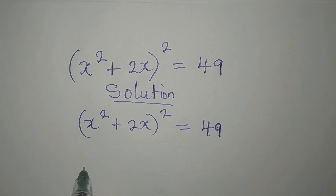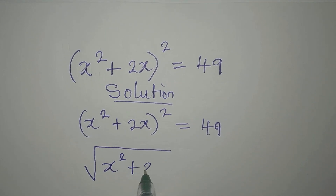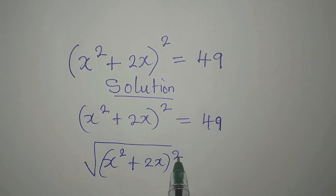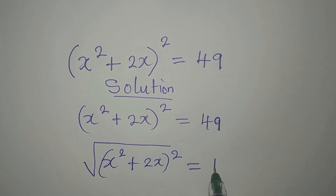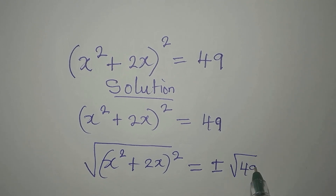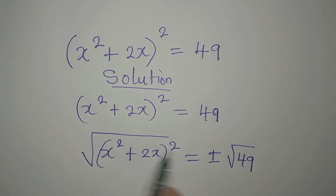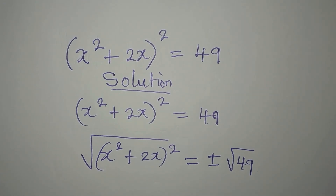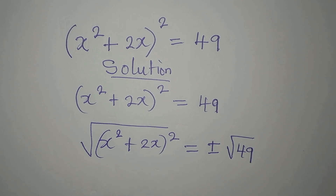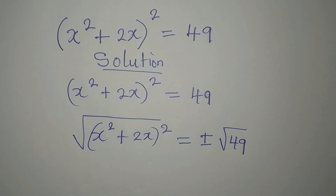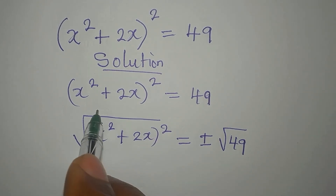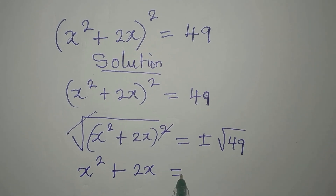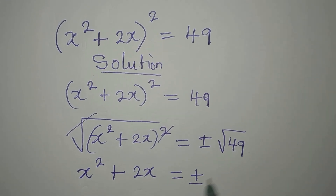Now what do we do in this case? We take the square root of both sides of x squared plus 2x squared. Taking the square root of both sides cancels the square, and on the other hand we will have positive or negative square root of 49. Do not forget that every time we take the square root of both sides, you're going to have plus or minus. The only time you will not have plus or minus is when dealing with length, because length is always positive. So we have x squared plus 2x equal to plus or minus square root of 49, which is 7.